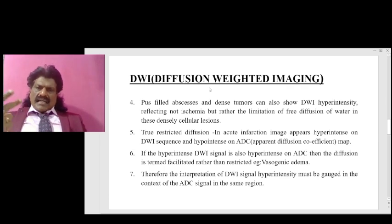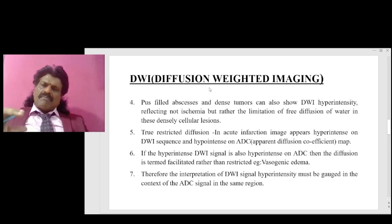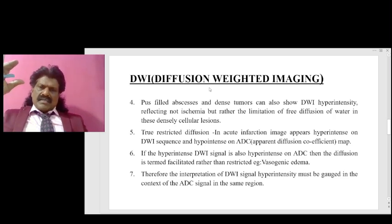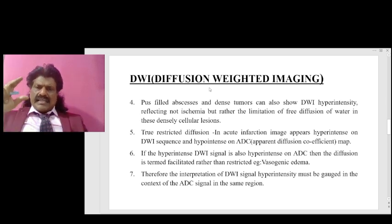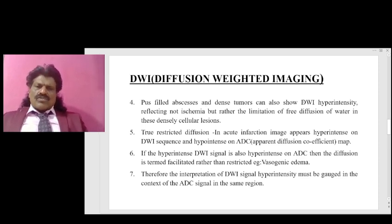In some conditions like inflammatory lesions, abscess, or tumor, there can also be diffusion abnormalities appearing hyperintense on DWI. How do we differentiate? In ischemic stroke it appears bright on DWI and dark on ADC, whereas pus-filled abscesses and dense tumors can also show DWI hyperintensity — reflecting not ischemia, but rather the limitation of free diffusion of water in these densely cellular lesions.